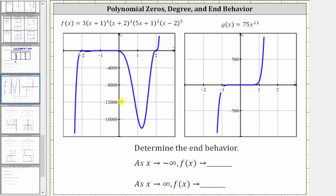Here is the graph of the original function, and here is the graph of g of x equals 75x to the eleventh, which is the term of highest degree. As x approaches negative infinity — moving to the left — the y values decrease without bound and approach negative infinity for both graphs. This verifies that as x approaches negative infinity, f of x approaches negative infinity.